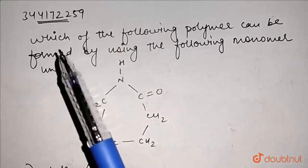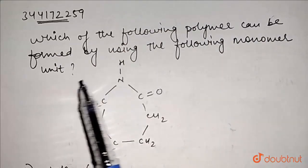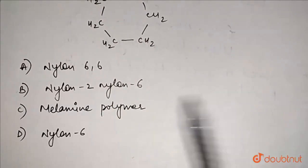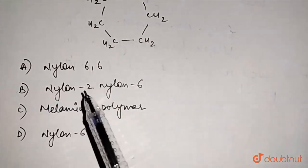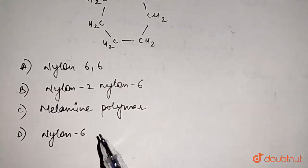So our question is, which of the following polymer can be formed by using the following monomer unit? So this is the structure. Option A is nylon 66, option B nylon 2 nylon 6, option C melamine polymer and option D is nylon 6.